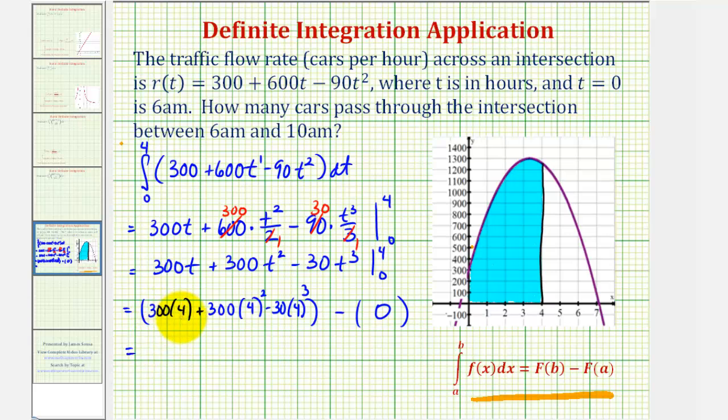So we're going to have 300 times four, that's 1,200, plus 16 times 300, it'll be 4,800. And then minus four to the third, that's 64 times 30, that's 1,920.